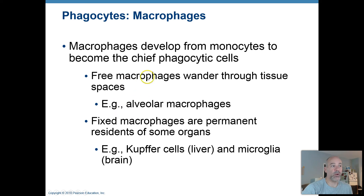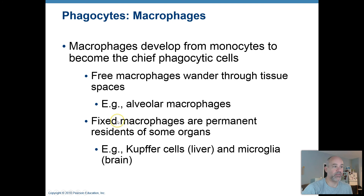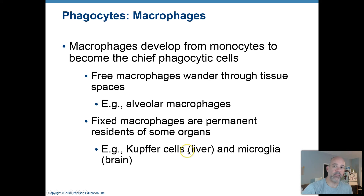Alveolar macrophages, for example, are macrophages stationed in the alveoli in the lungs — the tiny air spaces where gas exchange happens with the pulmonary capillaries. Then you have fixed macrophages, stationed in place permanently. Those include Kupfer cells in the liver. You always have macrophages stationed in your liver to intercept things that are not supposed to be there. The liver also helps the spleen get rid of old worn-out blood cells.